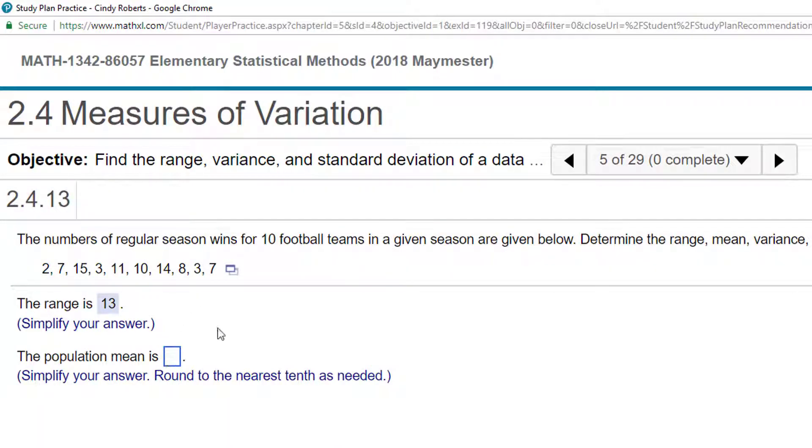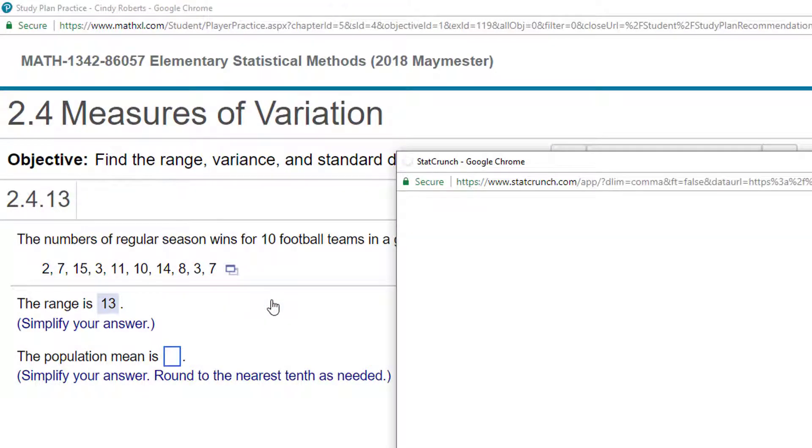Then it asks for the population mean, so I could get my calculator and add all these values up and divide by 10, or I can be lazy and open this in StatCrunch, because I like being lazy.